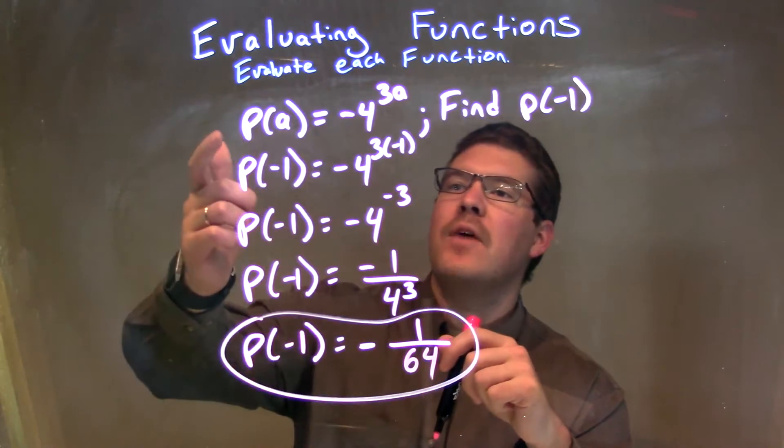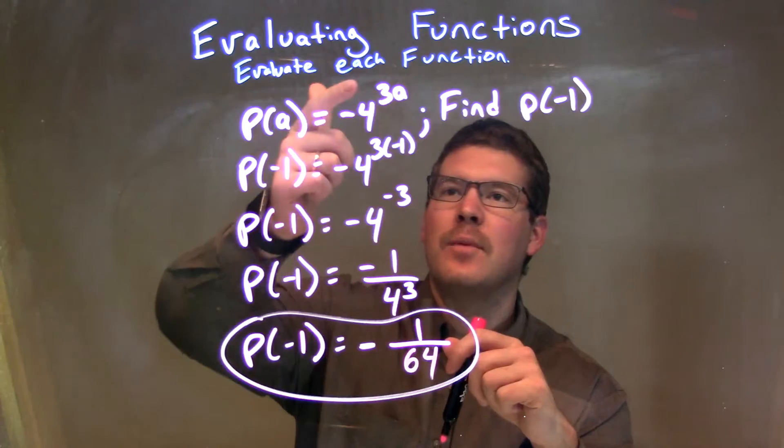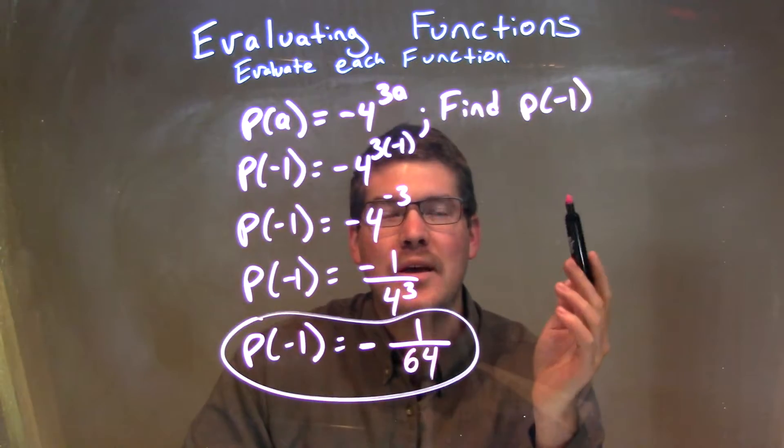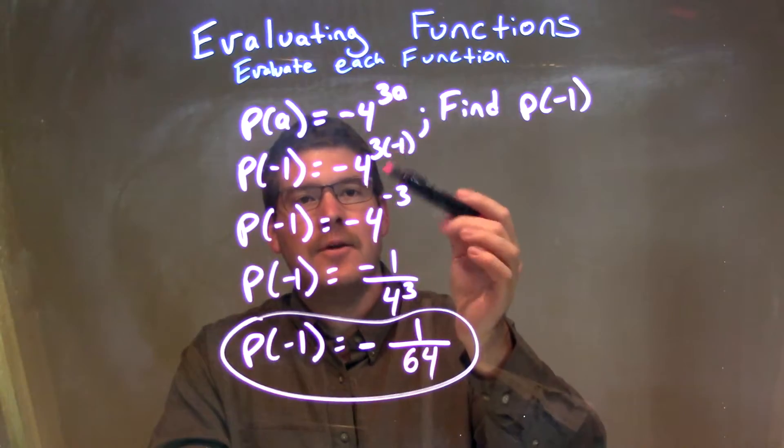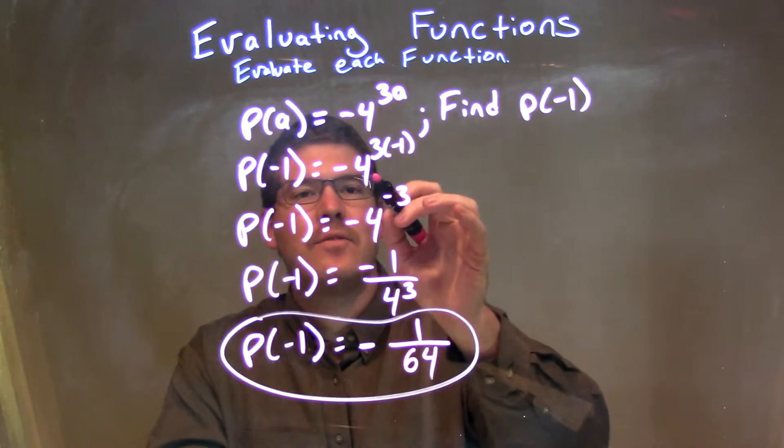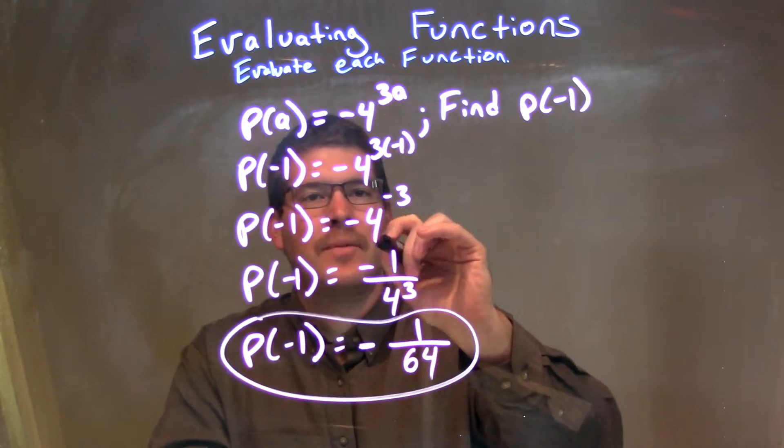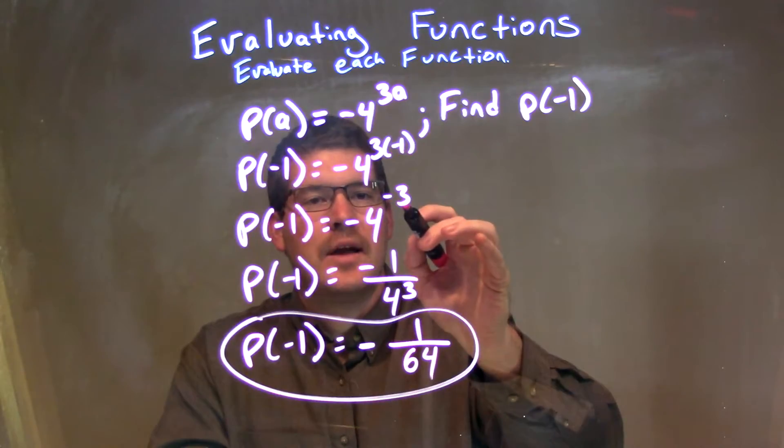So to recap, we're given P of A is equal to negative 4 to the 3A and we have to find P of negative 1. We plug in negative 1 for every single A value here. There's only 1 of them. So we have negative 4 to the power of 3 times negative 1. 3 times negative 1 was negative 3.